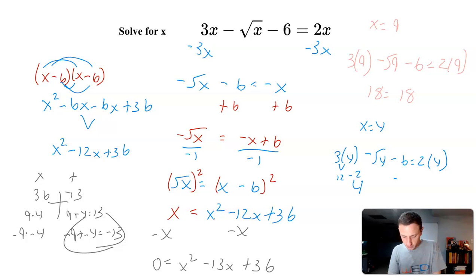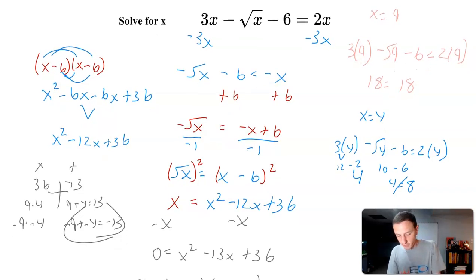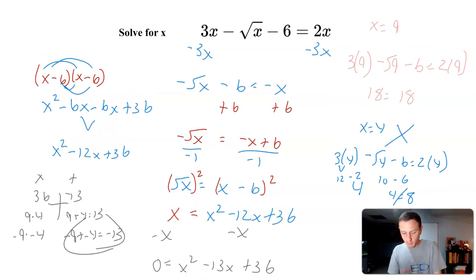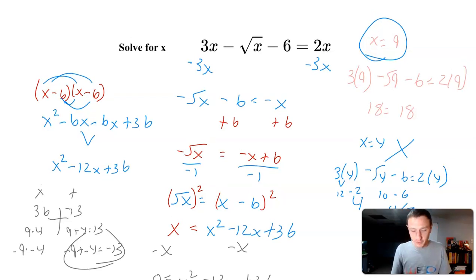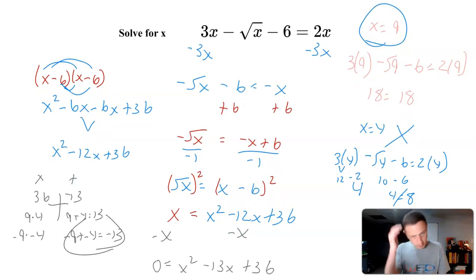3 times 4 is 12, 12 minus the square root of 4 is 2. So 12 minus 2 is 10, 10 minus 6 is 4. 4 is equal to 8? No, it is not equal to 8. So x equals 4 does not work. X equal to 9 is the only solution.